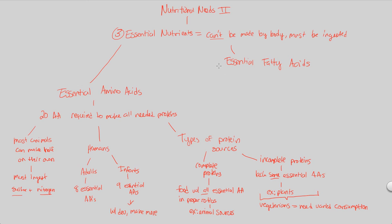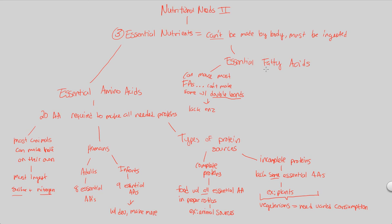Our body can actually make most of the fatty acids we need, but we can't make some with very specific double bonds. If you remember from Bio 1, when we looked at macromolecules, some fatty acid tails have kinks — these double bonds. The reason we can't make those with double bonds is because we, as a human organism, lack the enzyme capable of forming them. So we have to ingest the specific fatty acids that have those double bonds.